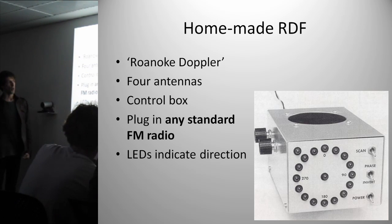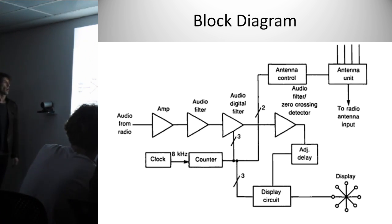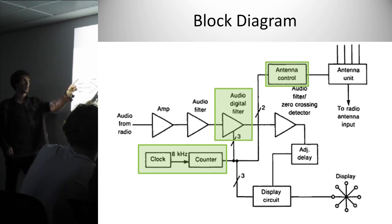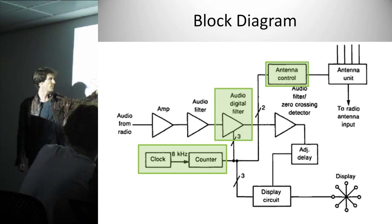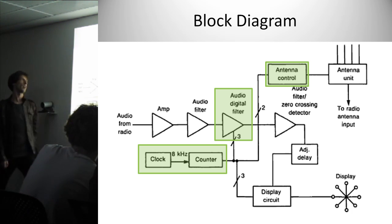This is an example of a popular amateur-built direction finder. It's called Roanoke Doppler. It has four antennas, a control box, and you read out the direction using the LEDs. And what's cool about it is that you can use any FM radio. You plug it in and it'll just work. The important thing to note is that you have to control the rate at which the antenna is being switched around as each subsequent antenna is being selected. That's what the clock is for. The reason why the clock is important is because you need to synchronize between the antenna control, the rotation, and how you pick up that sine wave and process it.